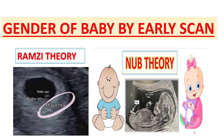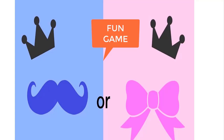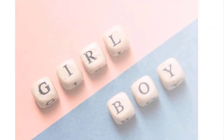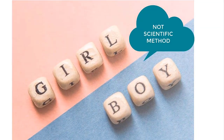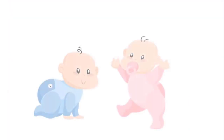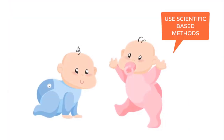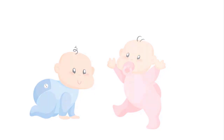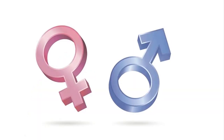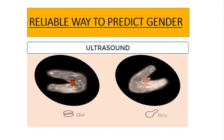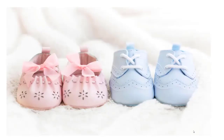Using the Ramsey theory or Nub theory to predict the gender of your baby is just a fun game to play. It is not a reliable way. In order to know the gender of your baby, you must use the reliable ways as I have told in my previous video — you can use the ultrasound method to know the gender of your baby. Either you have a baby girl or a boy, wishing you all the blessings a new baby brings. Thanks for watching the video.